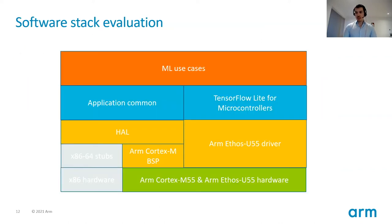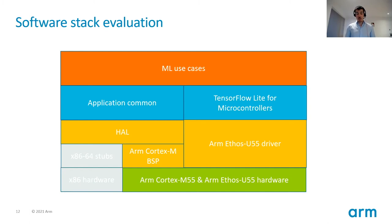Let's look at the software stack. ML applications have application common code — for example, instantiating the hardware abstraction layer (HAL), which schedules execution onto the Cortex-M CPU — and code specific to inference. We use TensorFlow Lite for Microcontrollers as the inference engine, which also instantiates the Arm Ethos U55 driver to schedule execution onto the micro NPU. The embedded ML application ultimately runs on either the Cortex-M55 or the Arm Ethos U55.